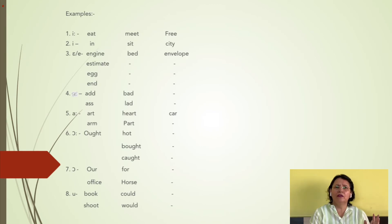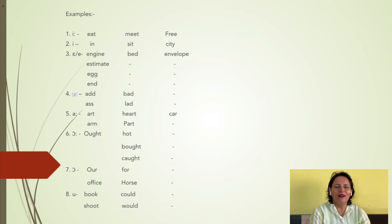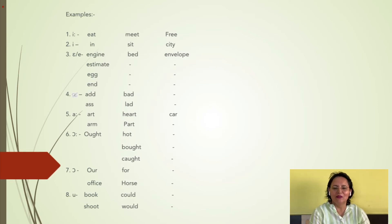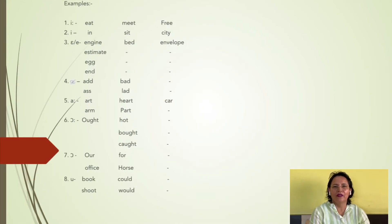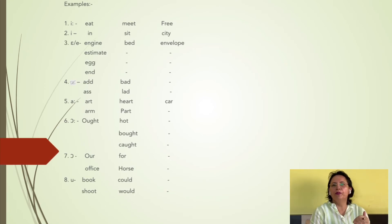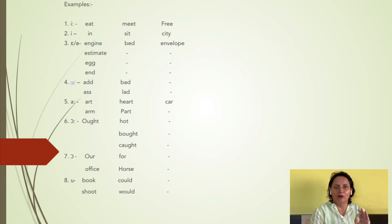Coming to the sixth vowel, that is /ɒ/. You have it in words like 'hot', 'bought', 'caught'. This is a back vowel, very close to open position, and is a rounded vowel. This is something which has to be kept in mind.